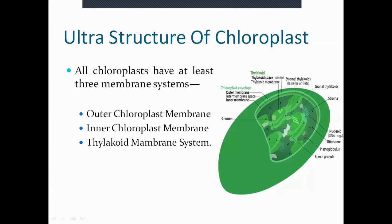All chloroplasts have three different regions. First is the outermost covering — the outer chloroplast membrane. Then there is the inner chloroplast membrane, with a very narrow space in between. Inside that is the thylakoid membrane, which is the active site of photosynthesis — the thylakoid membrane system is found inside the inner chloroplast membrane.